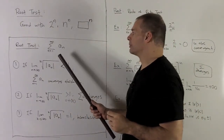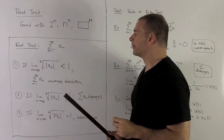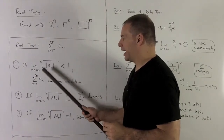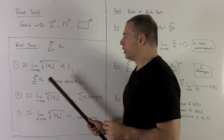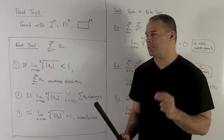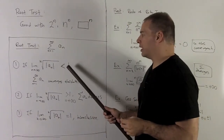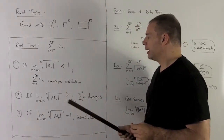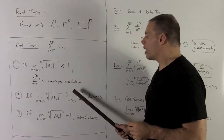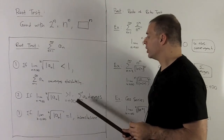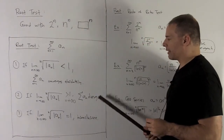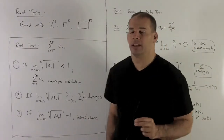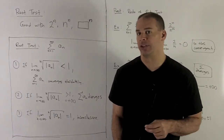The root test says: given a series sum of a sub n from 1 to infinity, we take the limit as n goes to infinity of the nth root of the absolute value of a sub n — equivalently, raising to the power 1 over n. If that limit is less than 1, the series converges absolutely. If it's greater than 1 or goes to plus infinity, the series diverges. If it equals exactly 1, the test is inconclusive and you'll need to do more work.